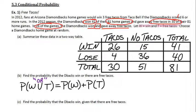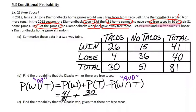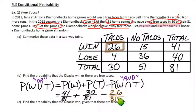The formula for that is: the probability of W plus the probability of T, minus the overlap so we don't count that twice. The probability of a win in general — there were 41 total wins out of 81, so 41 out of 81 for that. Probability of tacos is 30 total taco nights out of 81. And then we subtract the intersection — the night where they win and get tacos — that's 26 out of 81, the overlap we don't want to count twice. So the probability is 45 out of 81 that they either won or got free tacos.